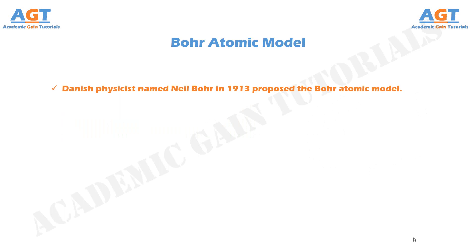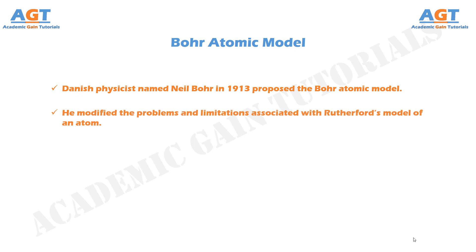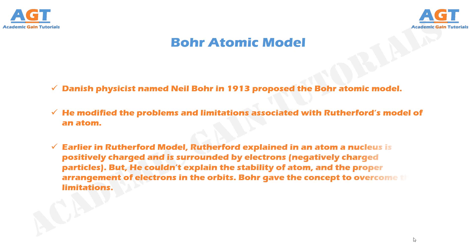Danish physicist Neil Bohr in 1913 proposed the Bohr atomic model. He modified the problems and limitations associated with Rutherford's model of an atom. Earlier in Rutherford's model, Rutherford explained that in an atom a nucleus is positively charged and is surrounded by electrons, negatively charged particles. But he couldn't explain the stability of the atom and the proper arrangement of electrons in the orbits. Bohr gave the concept to overcome these limitations.